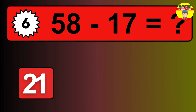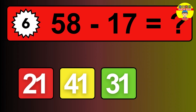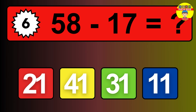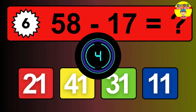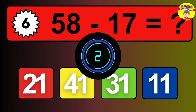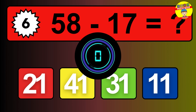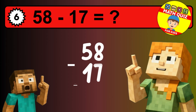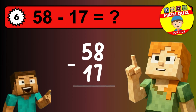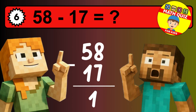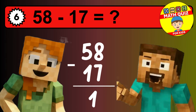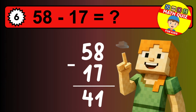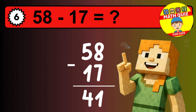What is 58 minus 17? Time to think. Let's solve this step by step. We start with the units: 8 minus 7 is 1. Then we go to the tens: 5 minus 1 is 4. The final answer is 41.